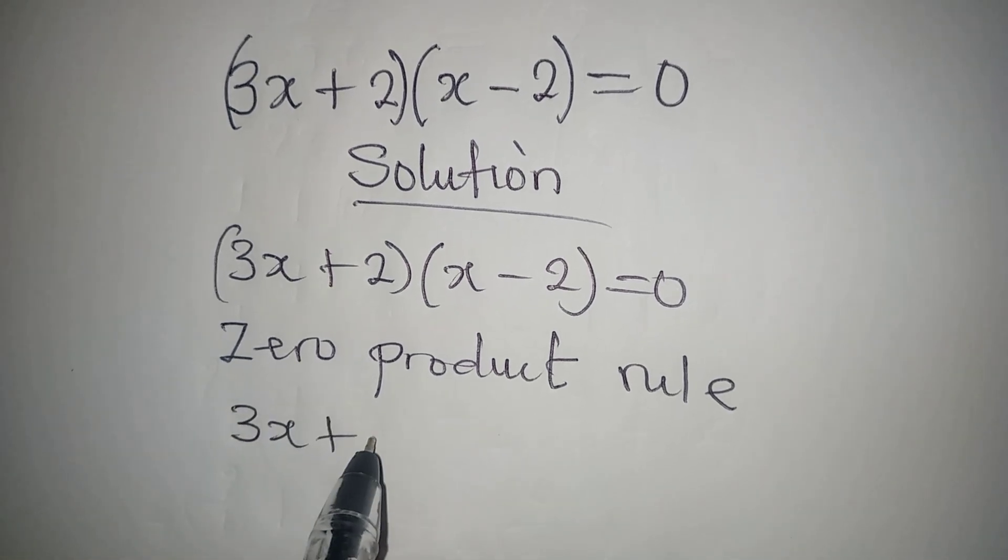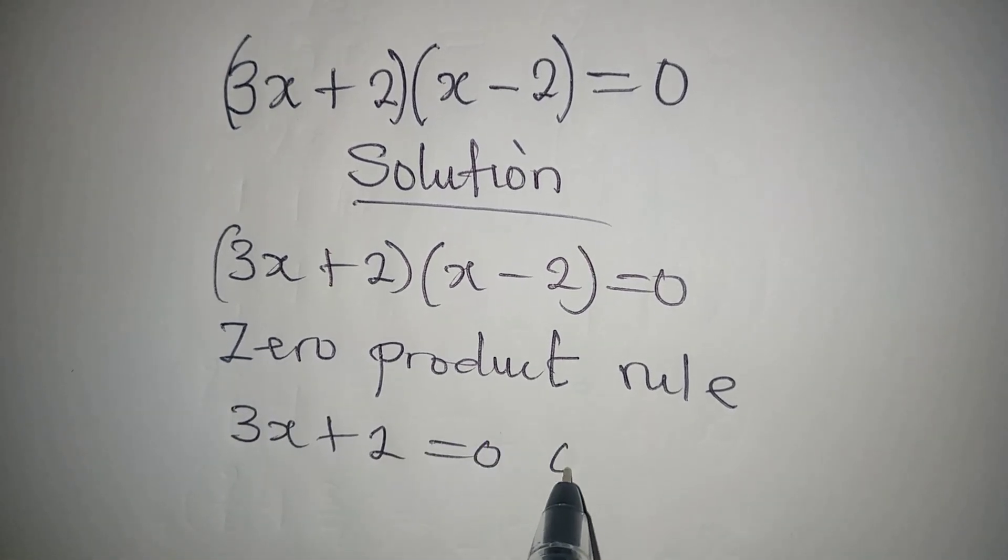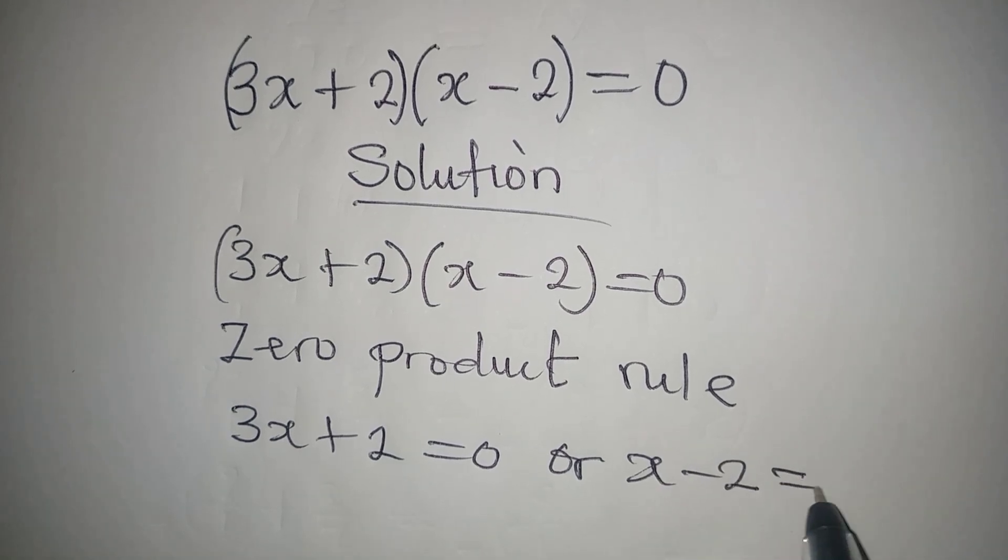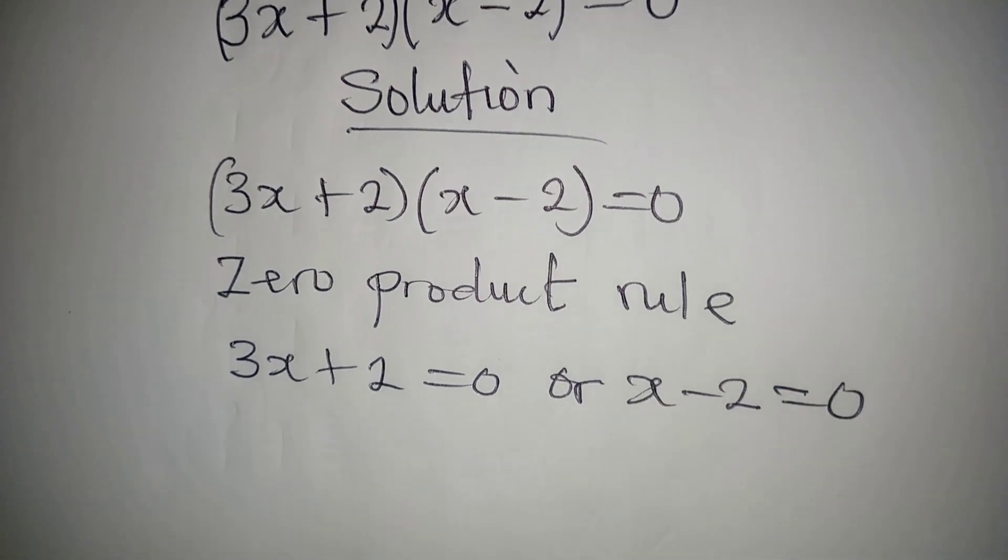So I pick 3x plus 2 to be equal to zero, or x minus 2 to be equal to zero.